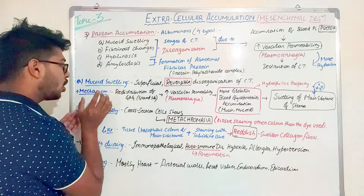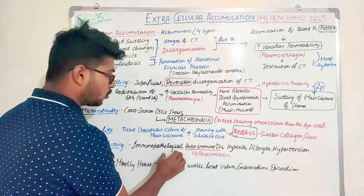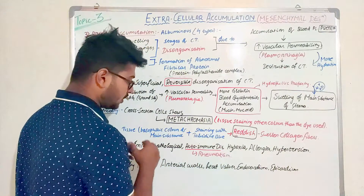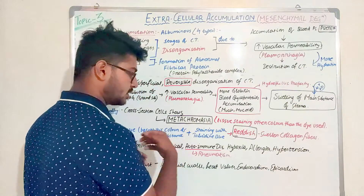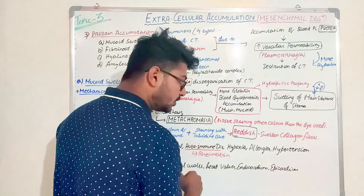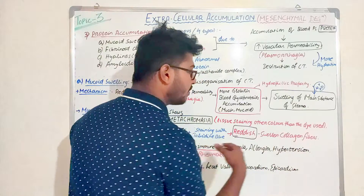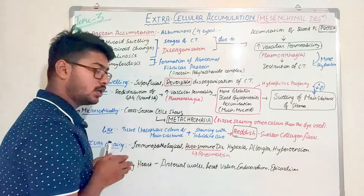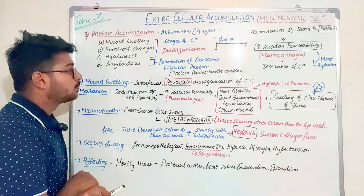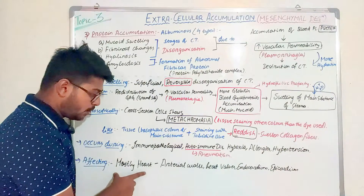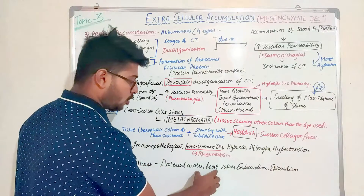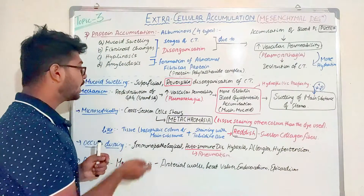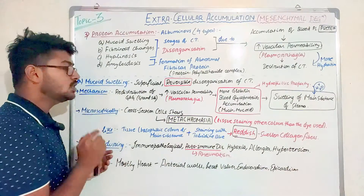Mucoid swelling occurs in immunopathological or autoimmune disorders, hypoxic conditions, allergic conditions, and hypertension or inflammation. In autoimmune disorders, the most important is rheumatism. It mostly affects the heart — specifically the artery walls, heart valves, endocardium, and epicardium layers — caused by mucoid accumulations.